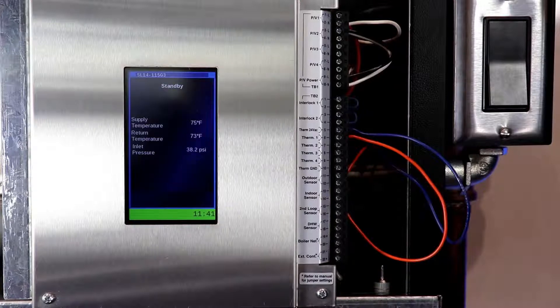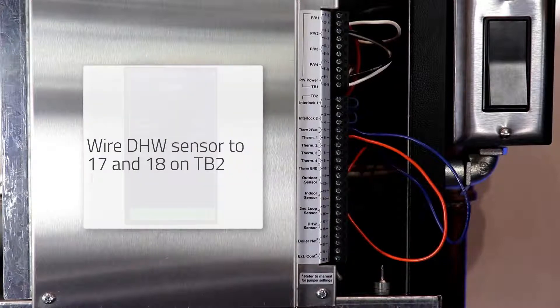If you are using a domestic hot water sensor, then the sensor will be wired into position 17 and 18 on the TB2 terminal. This is just for a 10K ohm type 2 thermistor for domestic hot water activation.